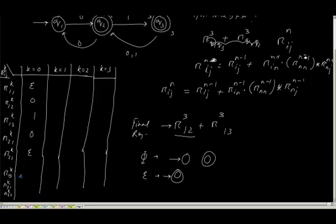So what is R23k? 1. R31k? Epsilon or phi? R31k? Am I able to reach from 3 to 1? So it is phi.